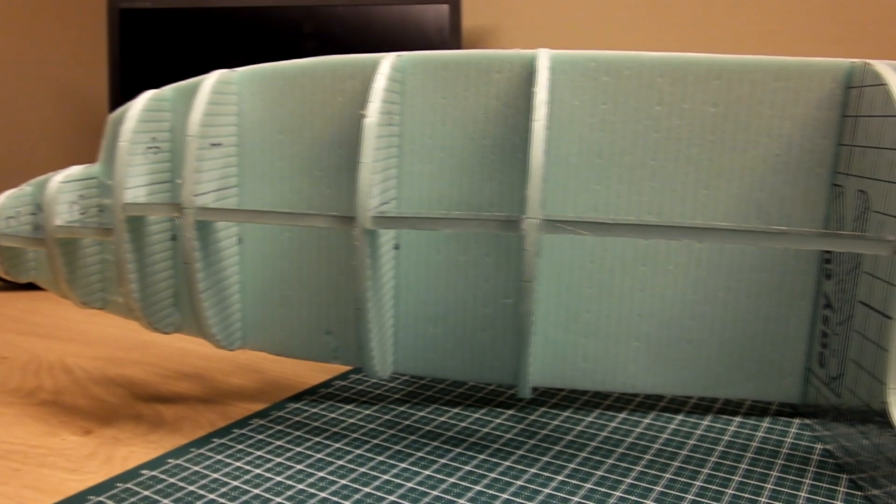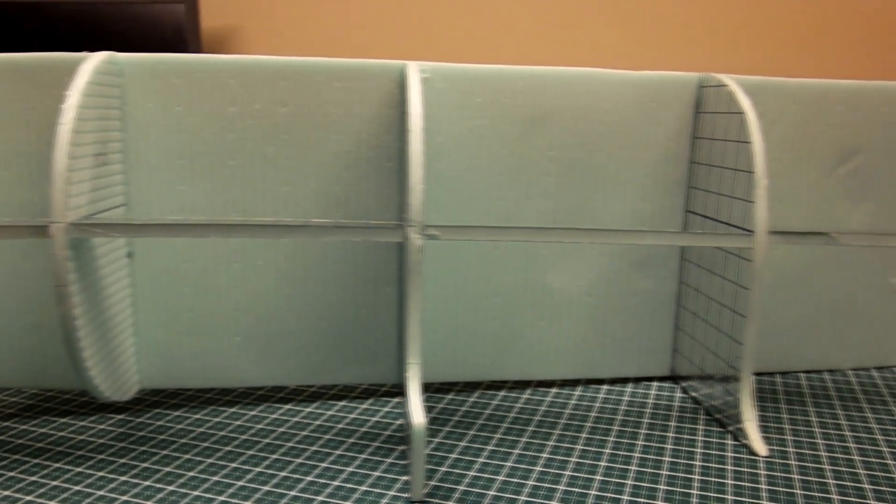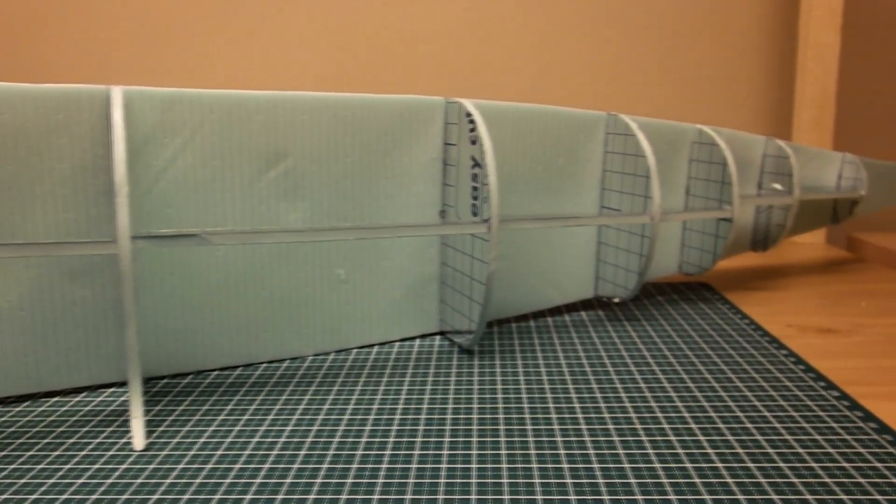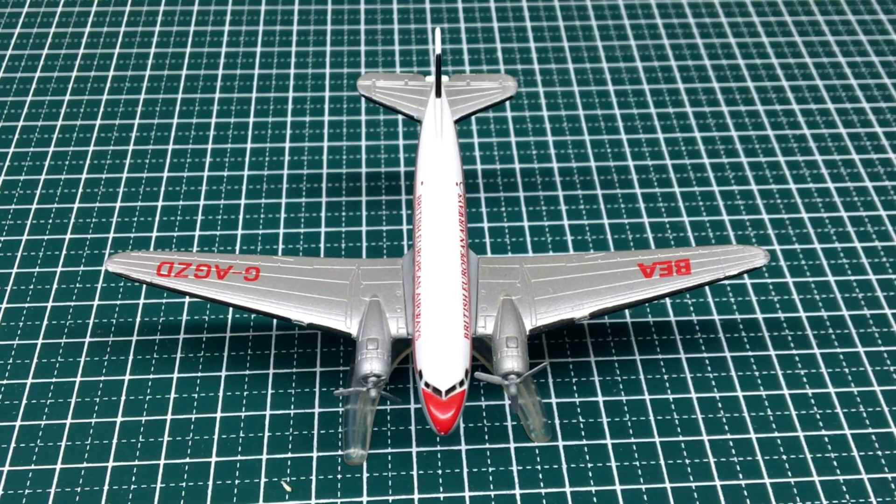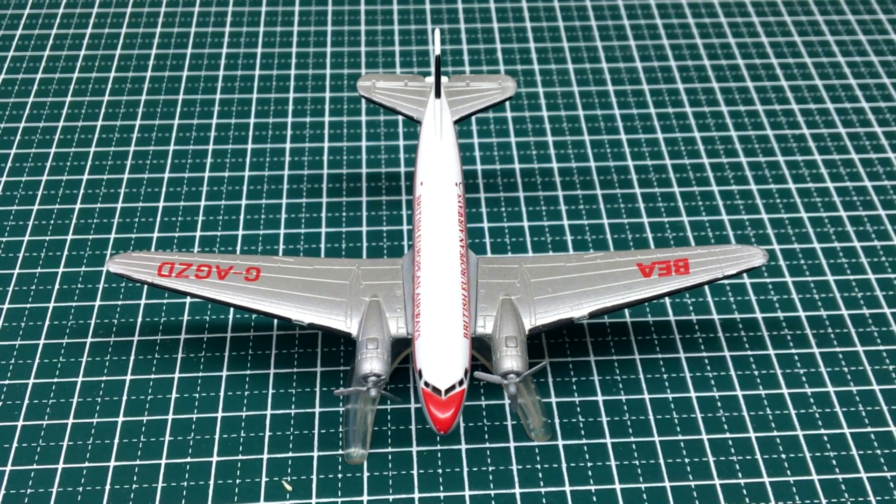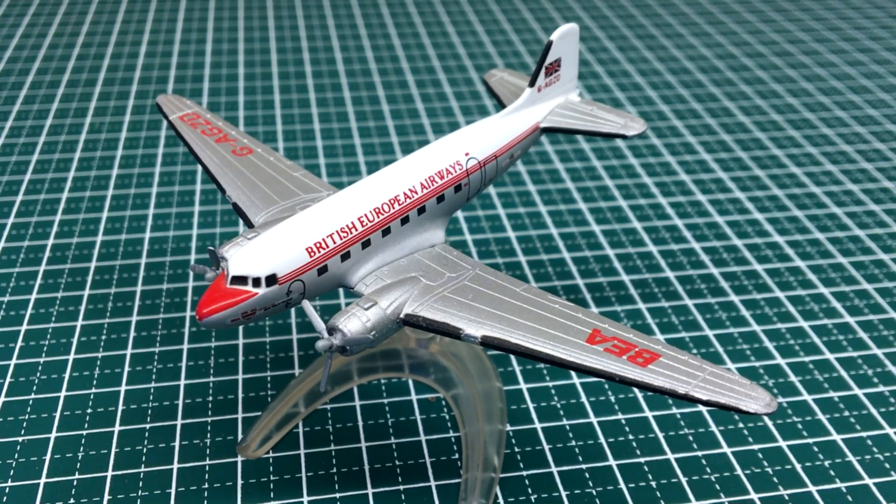The fuselage framework is now complete. And it's time to move on to another very important part of the airplane: the central wing. Located between the two engines, it is structurally the most complex part of any airplane.